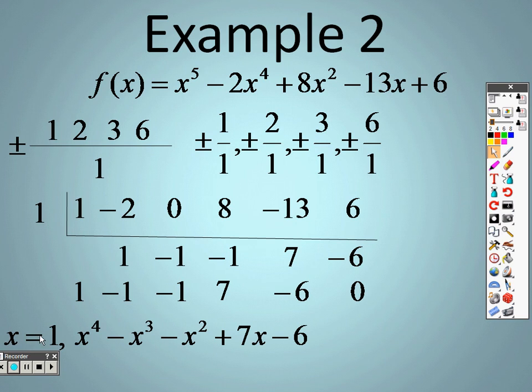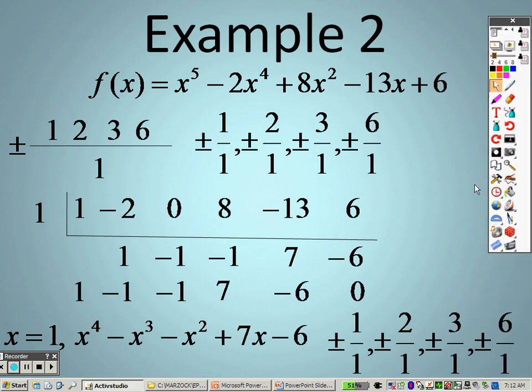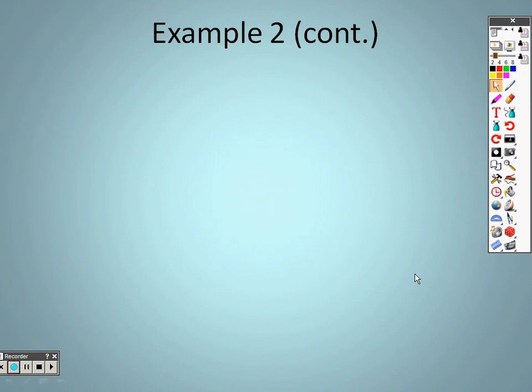So, that means x equals 1, and that also means that this right here, since it started at x^5, this is 1x^4 - 1x^3 - 1x^2 + 7x - 6. I have to do this all over again. So, that's what this is basically saying right here. What this is saying is, here is the 6, so what are all factors of 6? 1, 2, 3, and 6. Leading coefficient is 1, so 1, 1, 1, 1. And I have to redo this all over again.